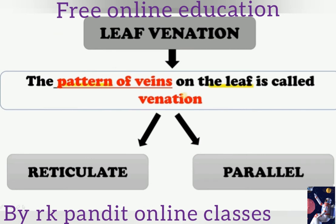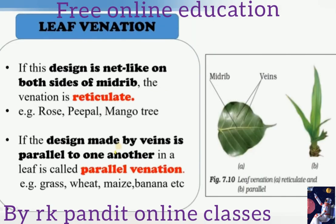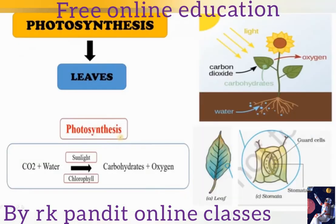A thick vein in the middle of the leaf is called the mid-rib. The pattern of veins on the leaf is called venation. There are two types of venation: parallel venation and reticulate venation. If the design is net-like with a mid-rib, it is called reticulate venation. If the veins are parallel, it is called parallel venation.